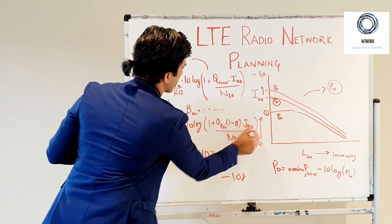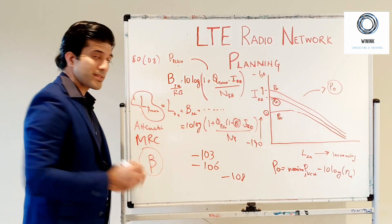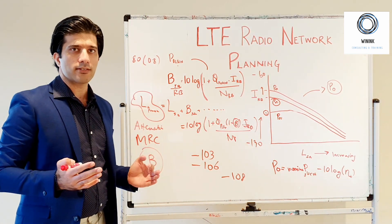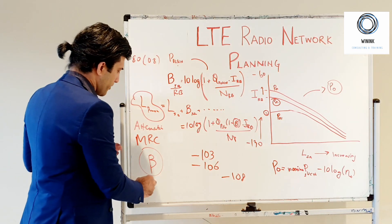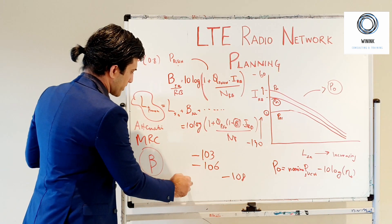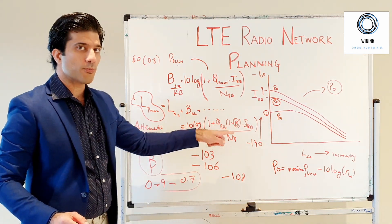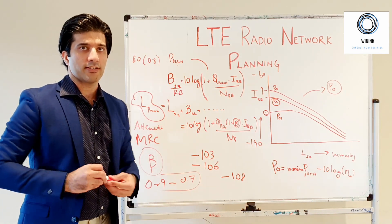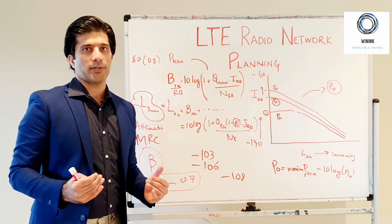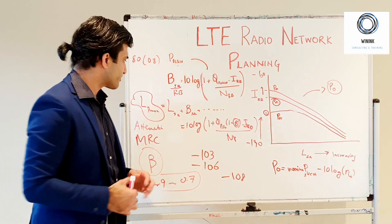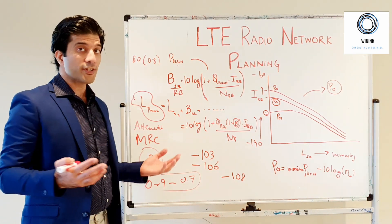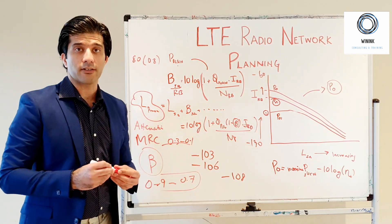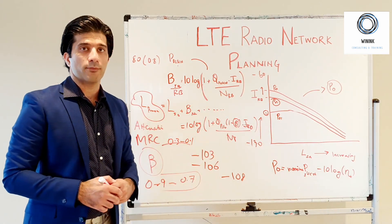This beta represents how you are using interference rejection techniques. If you have very few interferers and you're using IRC, your value will be hovering around 0.9 to 0.7. As you see, if you put 0.9 or 0.7 here, your value will significantly reduce, and the amount of noise rise margin that you need to include in your link budget will also reduce. Therefore you can have a better cell radius. If you are using IRC but you have a lot of interferers, then your value will be around 0.3 or 0.1, but still it will be better than your formula for maximum ratio combining.